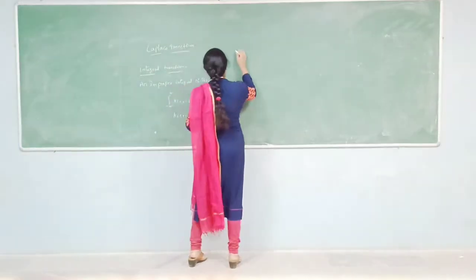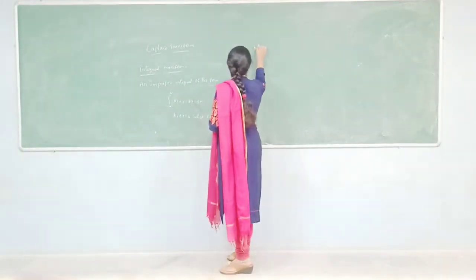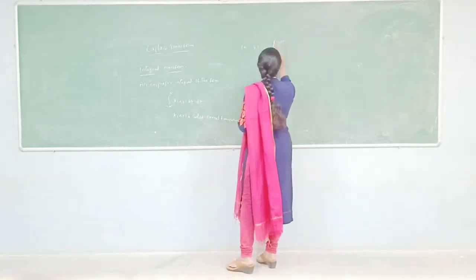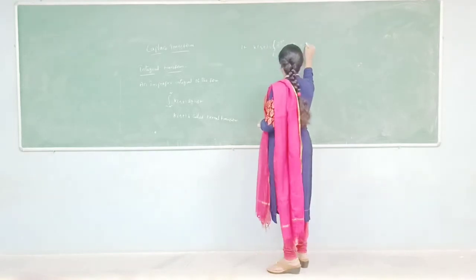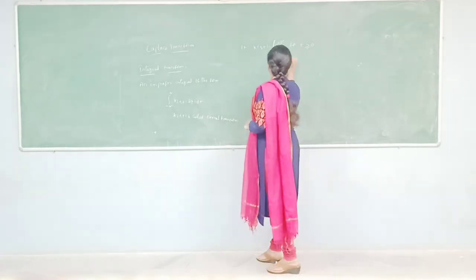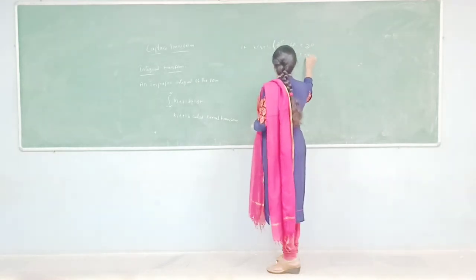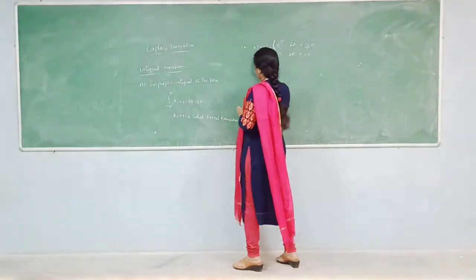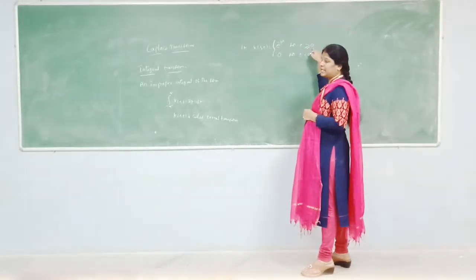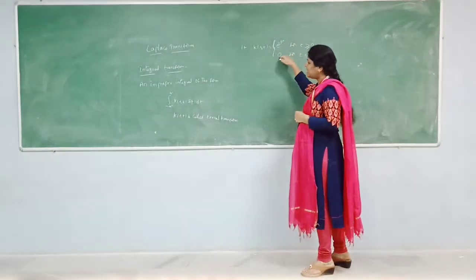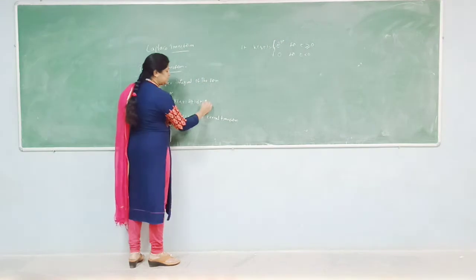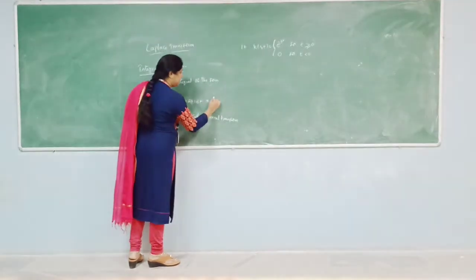Now, if k(s, t) is equal to e^(−st) for t greater than or equal to 0, and 0 for t less than 0, then substituting that, the kernel transform is denoted by f̄(s).